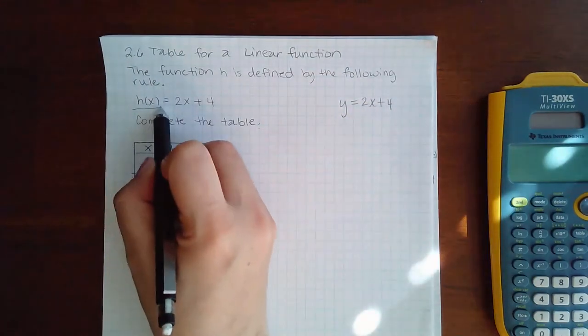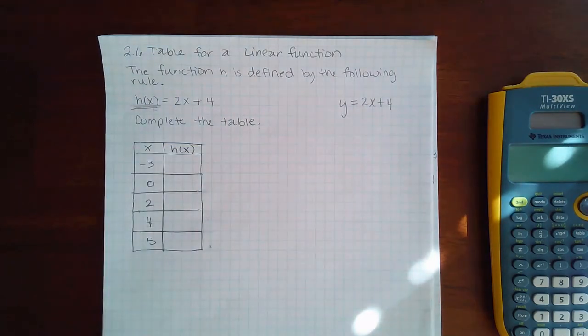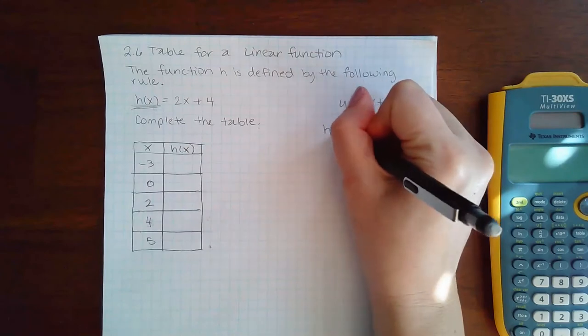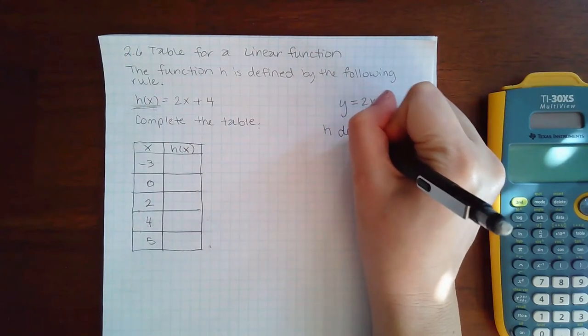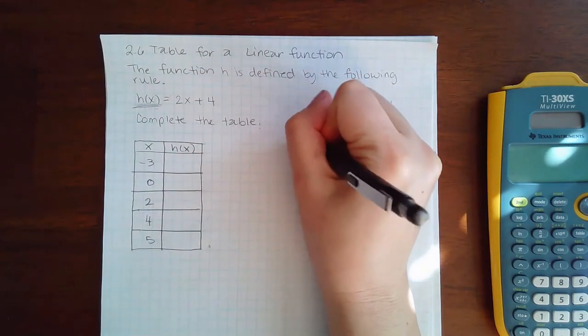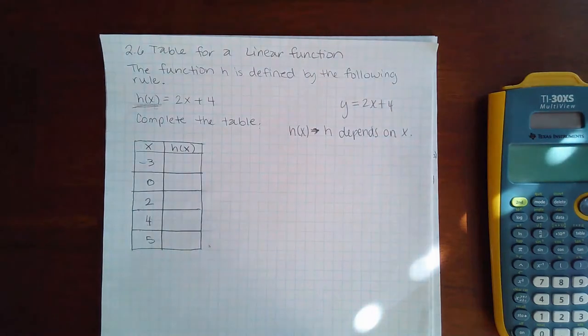They're now introducing what is called function notation, which is h of x equals 2x plus 4. Now all h of x means is that h depends on x. That's what h of x means, that h depends on x.